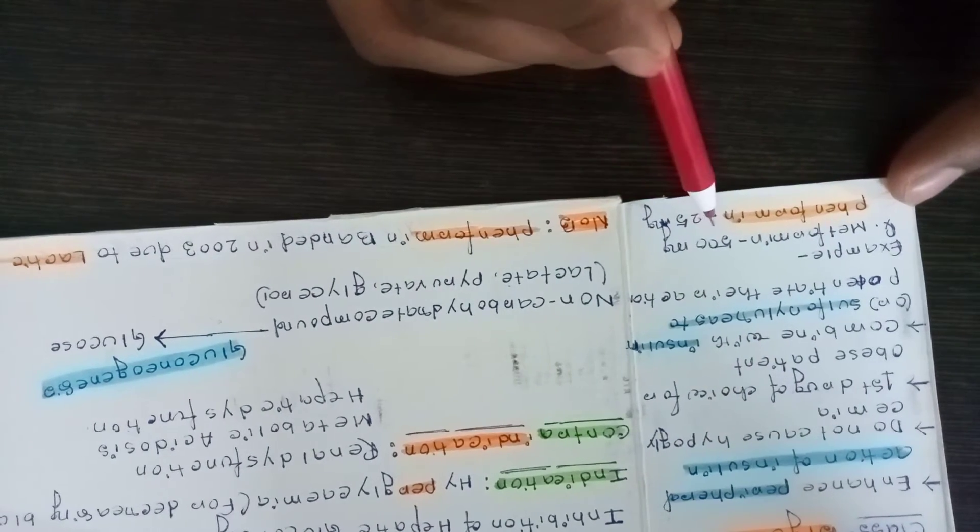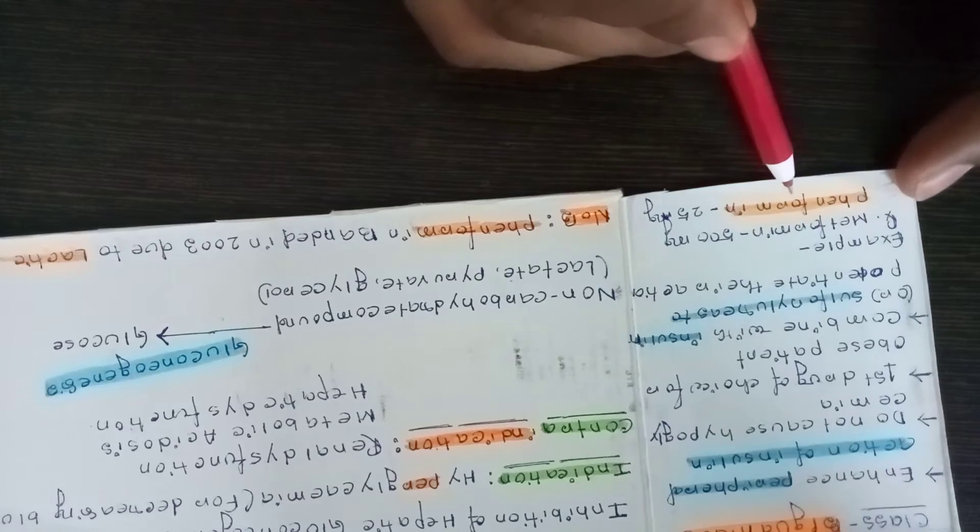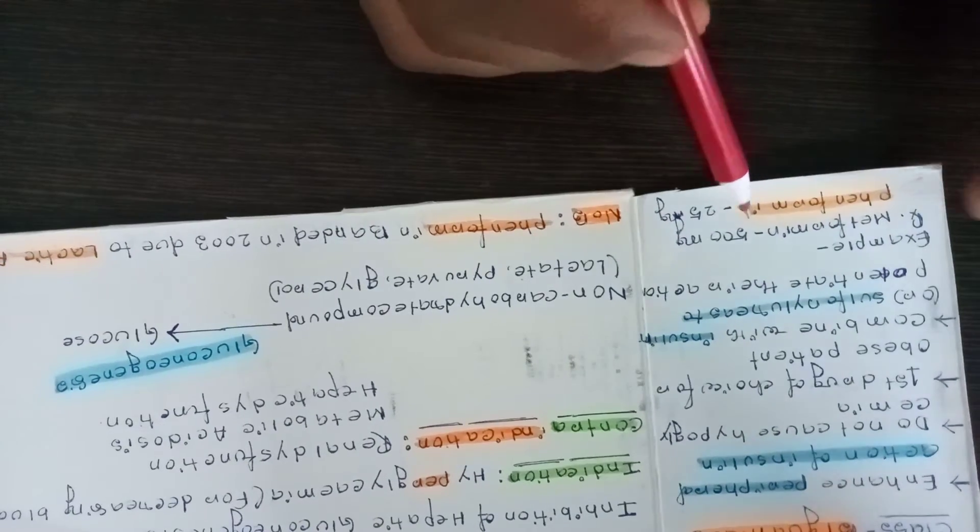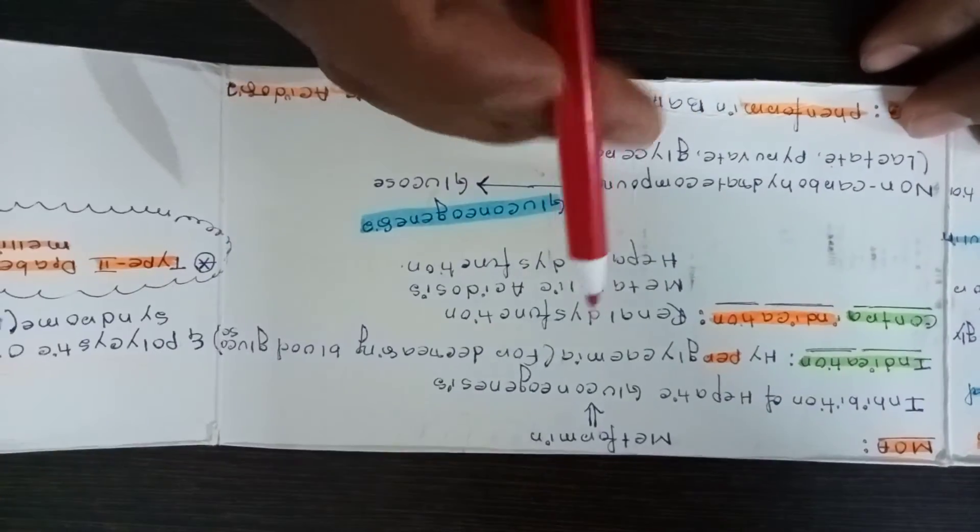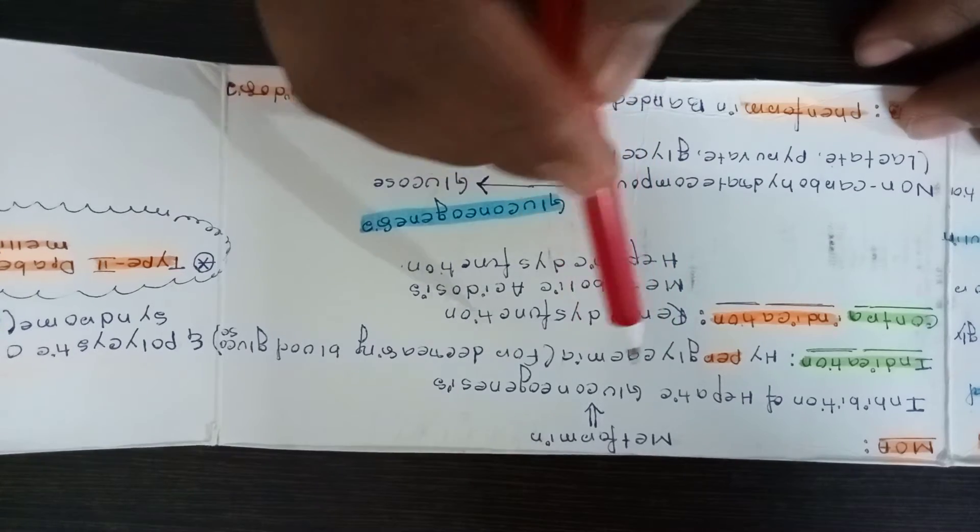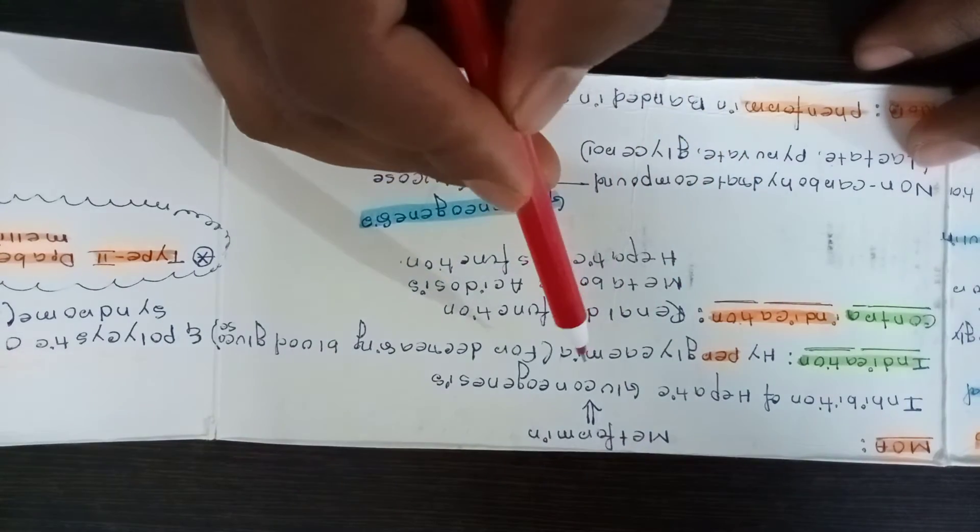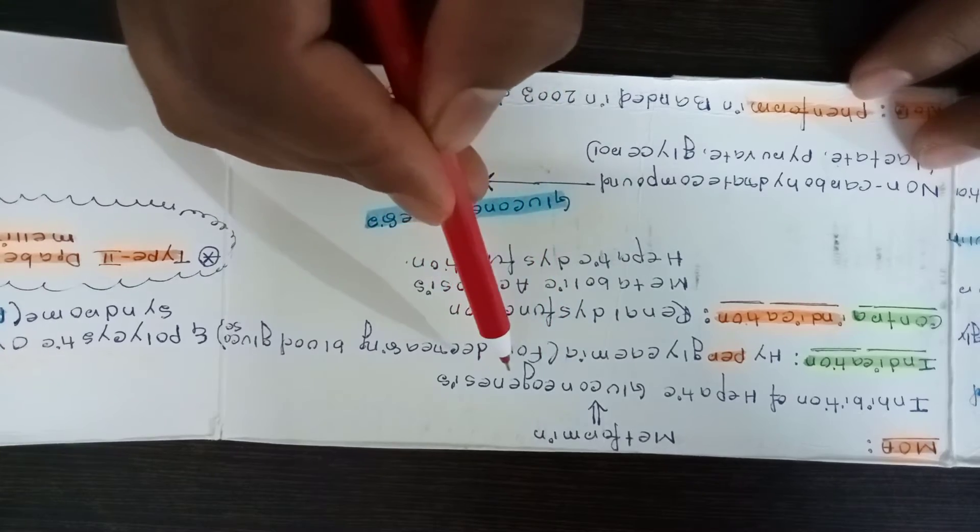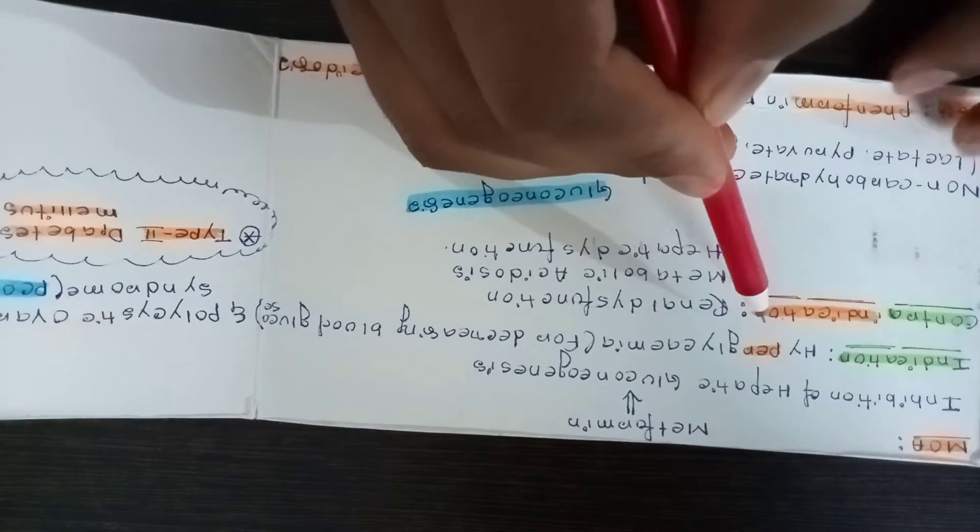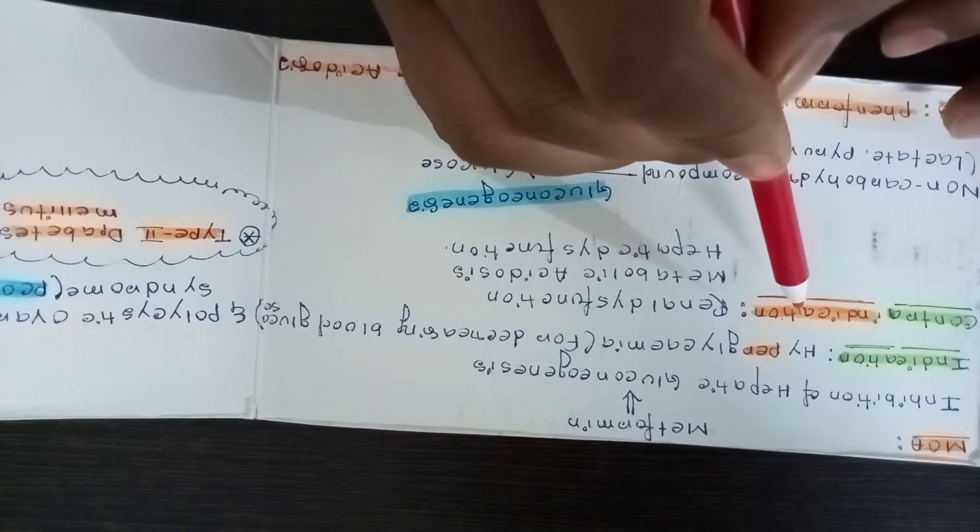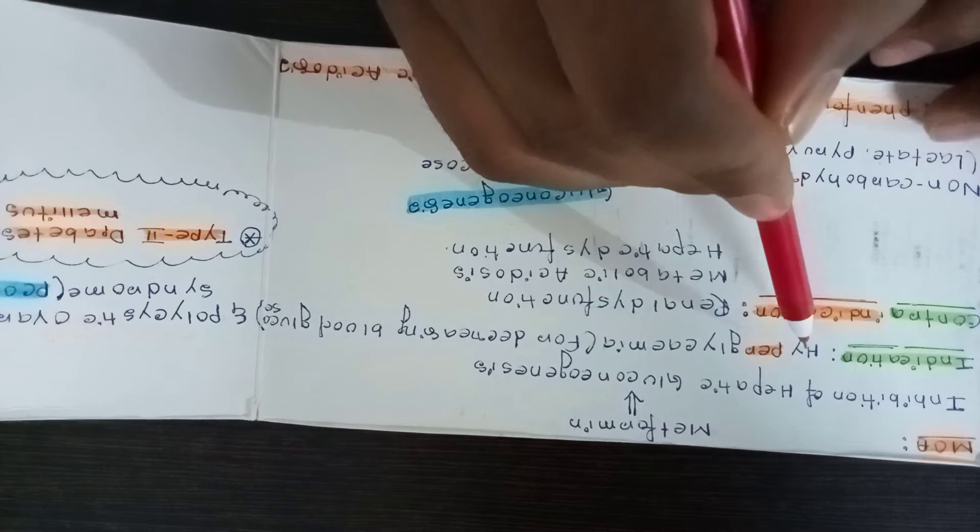Example of biguanide: metformin 500 mg. One more drug is phenformin. If you see the mechanism, metformin works by inhibition of hepatic gluconeogenesis.